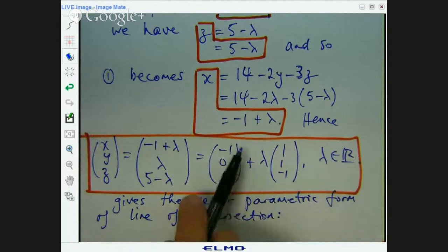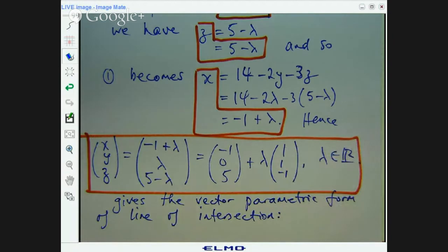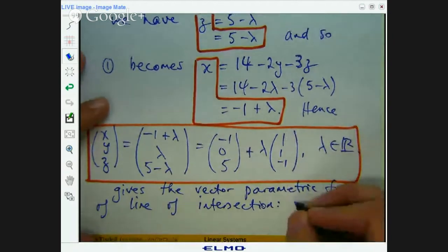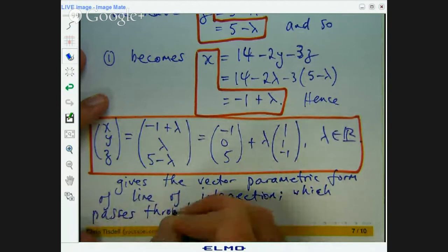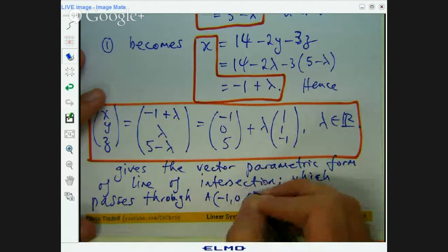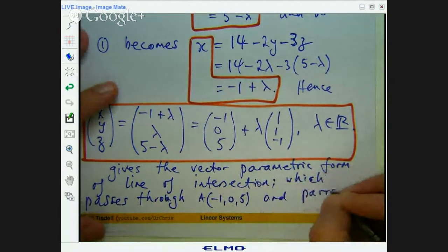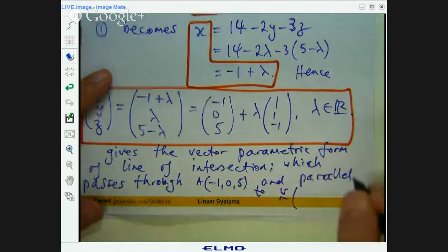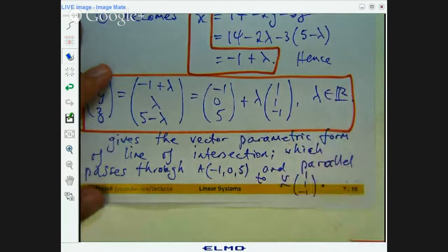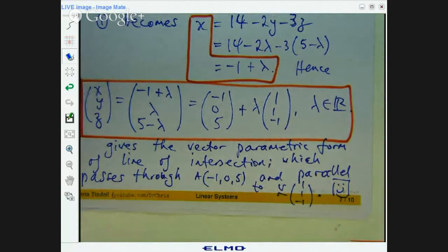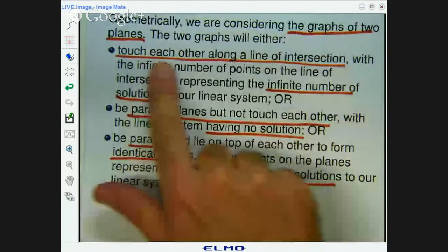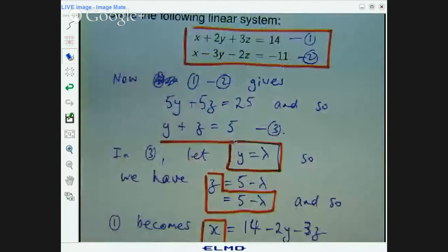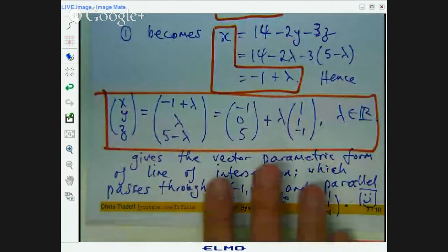So what is this line? It's a line that passes through the point negative one, zero, five, and is parallel to the vector one, one, negative one. So it passes through, let's say, the point A, and the line's parallel to the vector one, one, negative one. So this linear system is the first case. They touch each other, the two planes touch each other along a line of intersection. There's still an infinite number of solutions and this is the vector way of writing the line.